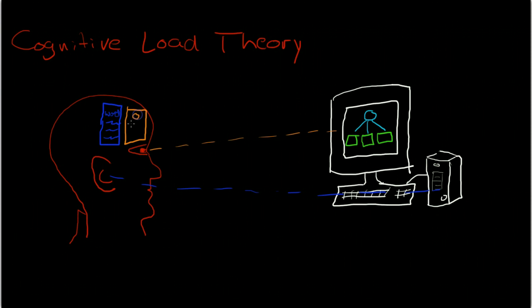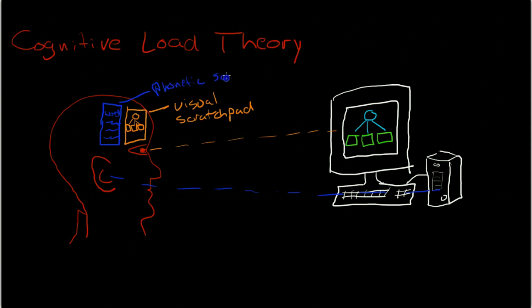These are processed in what are considered two separate channels, two different parts of working memory inside our brain. There is a portion of working memory that is dedicated to the processing of visual information like concept maps, diagrams, pictures, etc. And then a separate part of the working memory, known as the phonetic scratchpad, that processes words. And these words could either be written text or spoken word. Again, the phonetic scratchpad and the visual scratchpad together are called working memory.